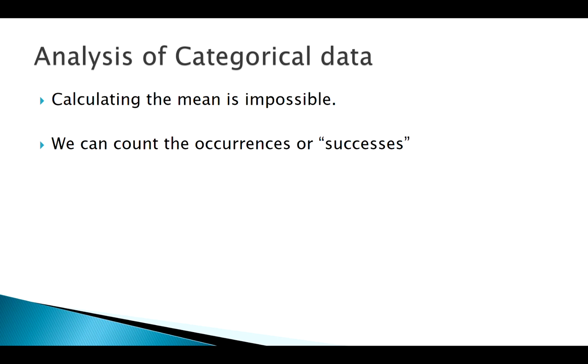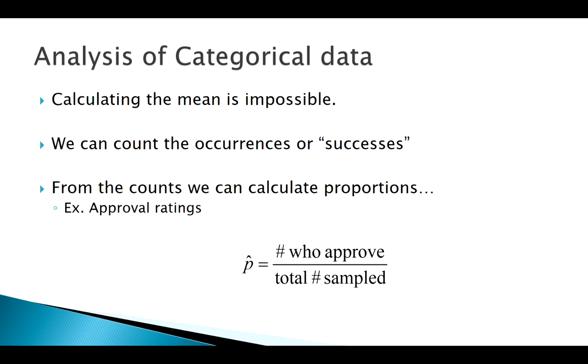But what we can do is we can count the number of occurrences of a specific category we might be interested in and call that a success. And then we can calculate what we call our proportion from those number of successes.